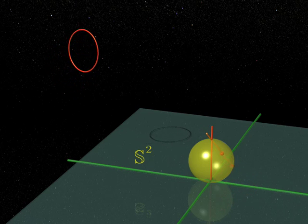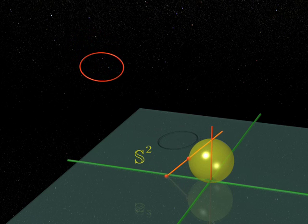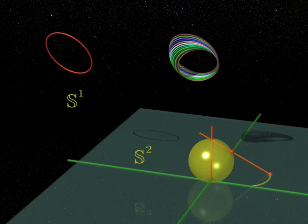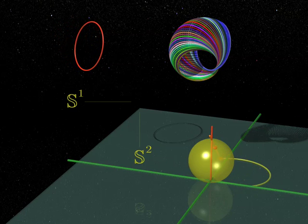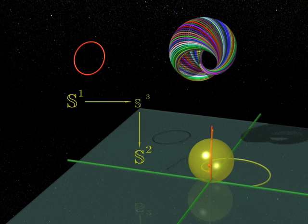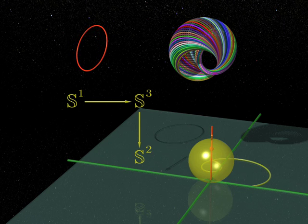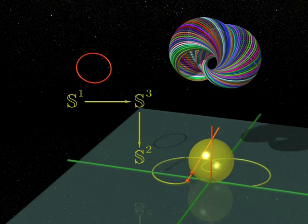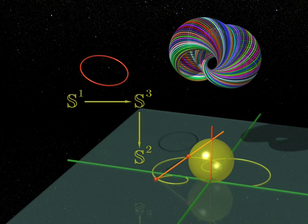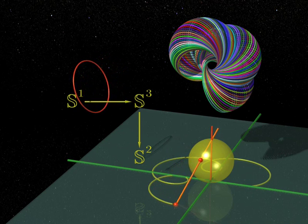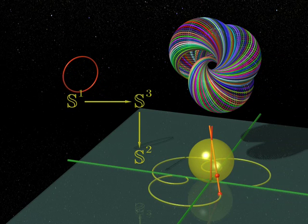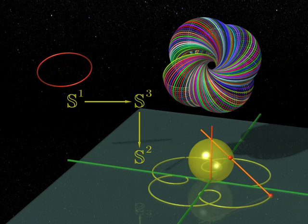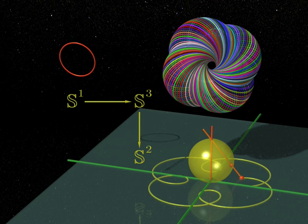So we have a circle for each point on the two-sphere. But a circle is a sphere of dimension one. All these circles fill up the three-sphere. Each point on the three-sphere belongs to a single circle, and therefore defines a point on the two-sphere. In this way, we get a projection from the three-sphere to the two-sphere. Mathematicians say that above any point of the base S2, there is a fibre which is a circle S1, and that the total space of this fibration is the sphere S3.